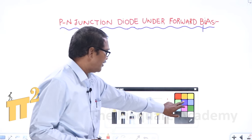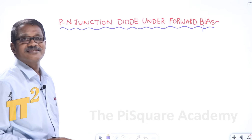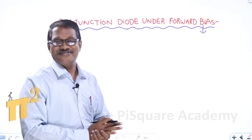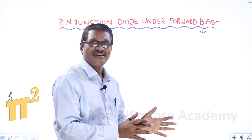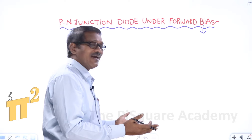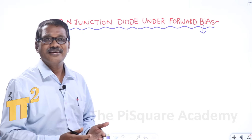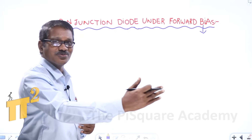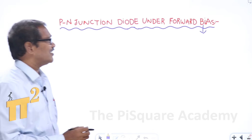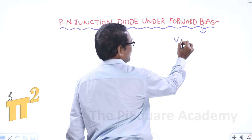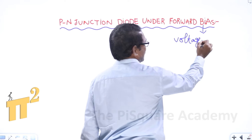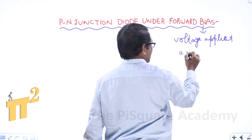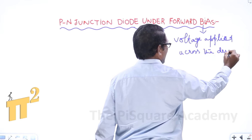Under forward biased conditions, what is a biased condition? Basically, bias means we are applying voltage across the device. If we apply potential difference across the diode, it results in a force acting on the charged particles, causing them to move, which constitutes electric current. That is nothing but a biased condition — voltage applied across the device.